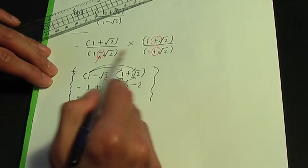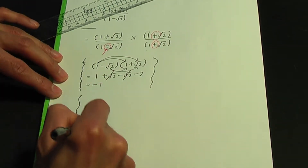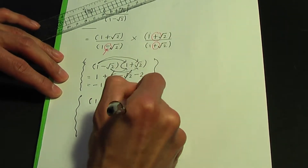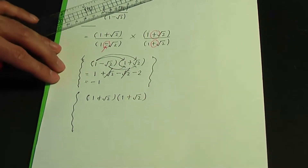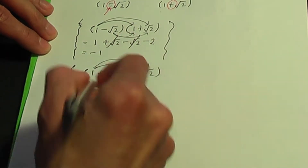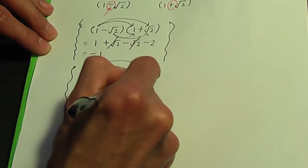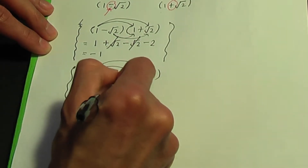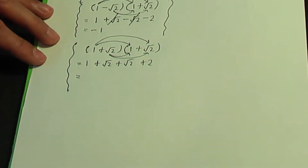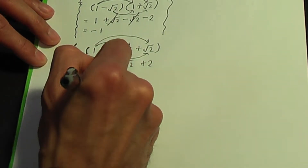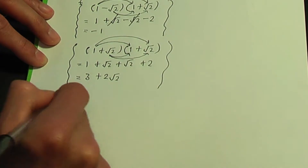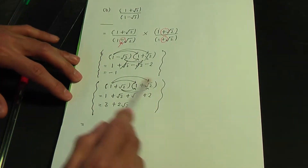So the bottom pair of brackets gives minus one. Now let's do the side calculation for the top pair: one plus root two multiplied by one plus root two. One times one is one, one times root two is root two, root two times one is root two, and root two times root two is two. Adding like terms: one plus two is three, and root two plus root two is two root two.